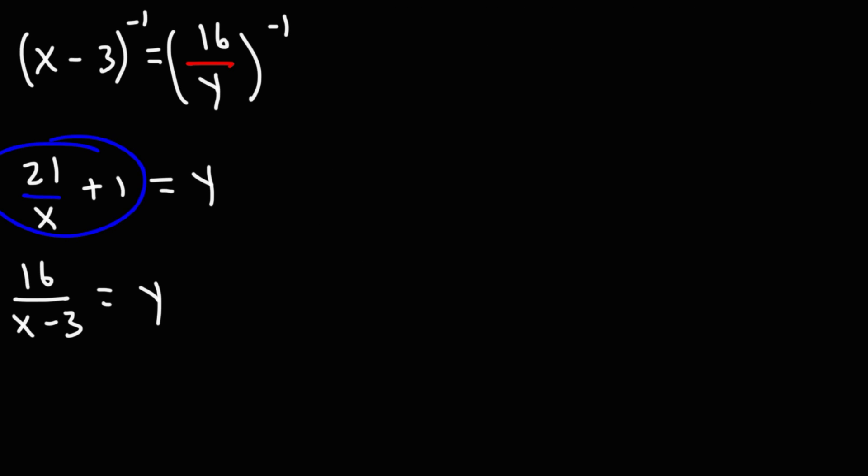So now, since both of these expressions equal y, we can set them equal to each other. So y equals 21 over x plus 1, and it's also equal to 16 over x minus 3. Now we need to solve for x.